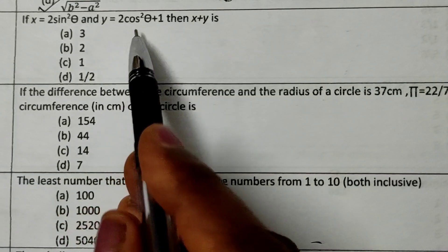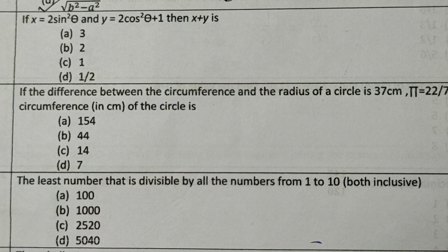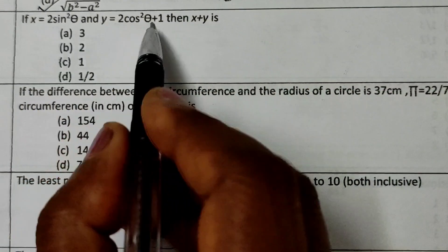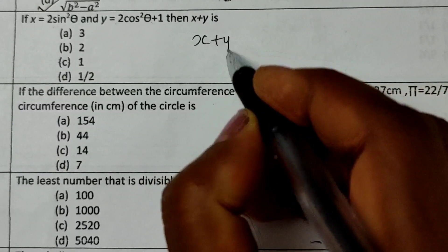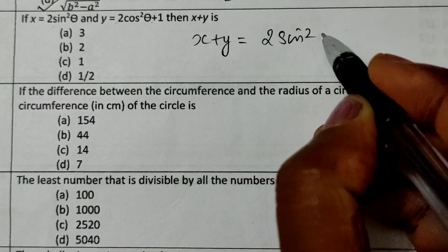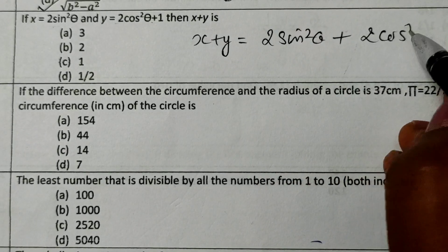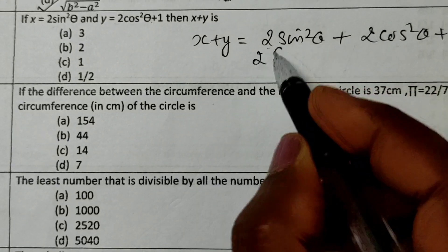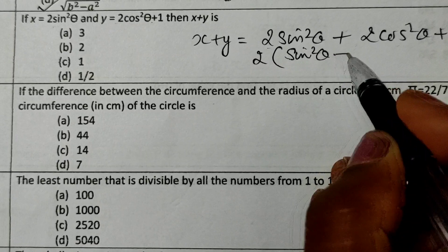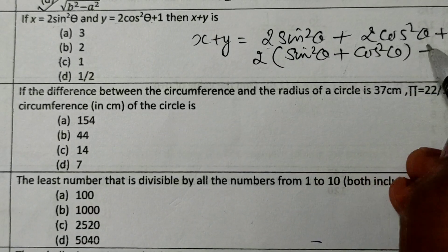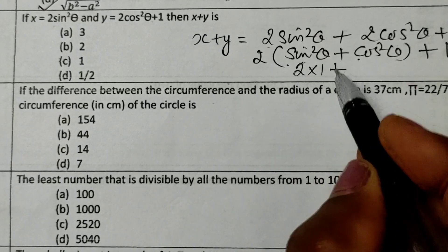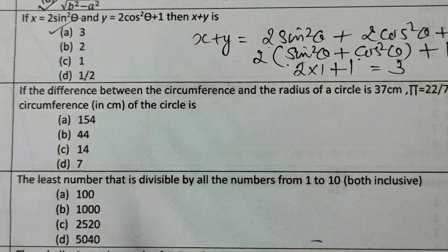Now, x = 2sin²θ and y = 2cos²θ + 1. What is x + y? x + y = 2sin²θ + 2cos²θ + 1. Taking 2 as common: 2(sin²θ + cos²θ) + 1. Since sin²θ + cos²θ = 1, this is 2 × 1 + 1 = 3. So the answer is 3.